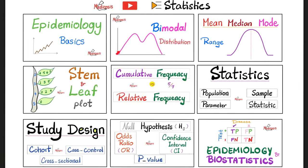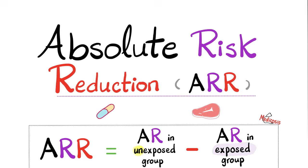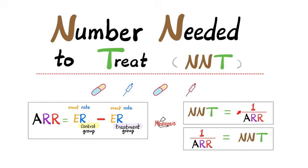This is my statistics playlist — please watch these videos in order for maximum understanding and retention. Before you watch this video, please refer to my video on absolute risk reduction, which equals the event rate in the unexposed group (the control group) minus the absolute risk in the exposed group. The reciprocal of the absolute risk reduction is called the number needed to treat, and I have a video on that topic as well.